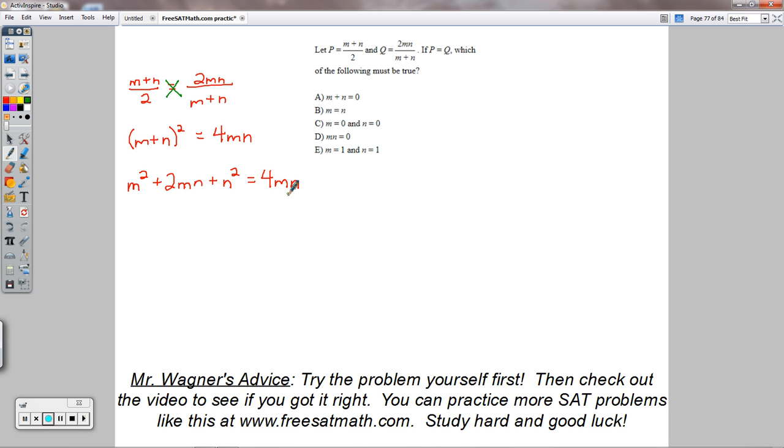Subtracting the 4MN from both sides would give me M squared minus 2MN plus N squared equals 0.